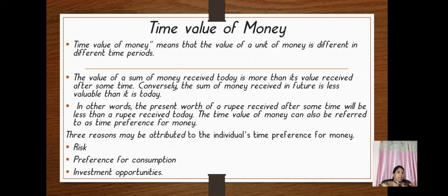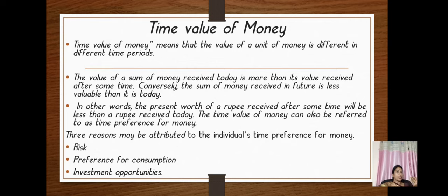Next, we are going to see about the time value of money. The term itself denotes that the value of a unit of money is different in different time periods. The value of a sum of money received today is more than its value received after some time. Conversely, a sum of money received in the future is less valuable than it is today — the present worth of a rupee received after some time will be less than a rupee received today. For example, 100 rupees was more valuable 10 years back, but today its value is like 10 rupees.